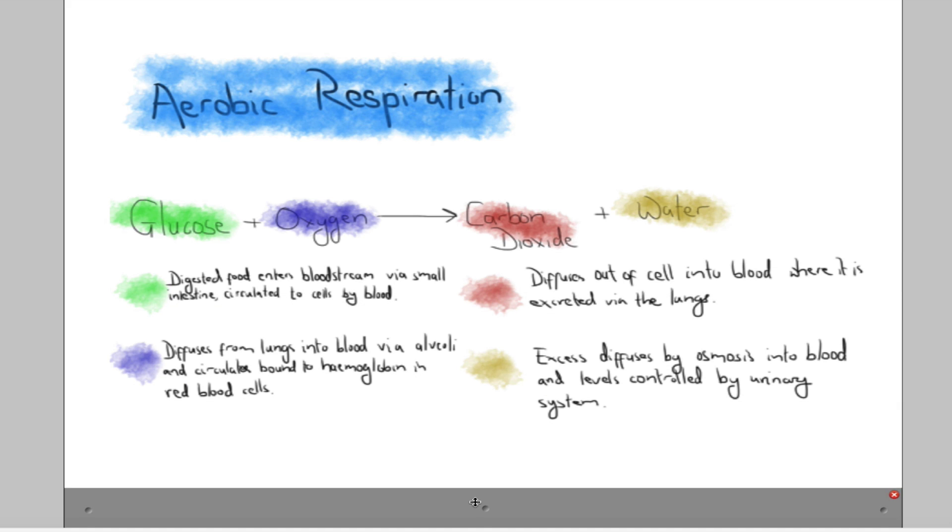The reason I put those colors in there is to make the point that glucose we're going to get from our digested food. That will enter the bloodstream via the small intestine, and it gets circulated to all cells by the blood.